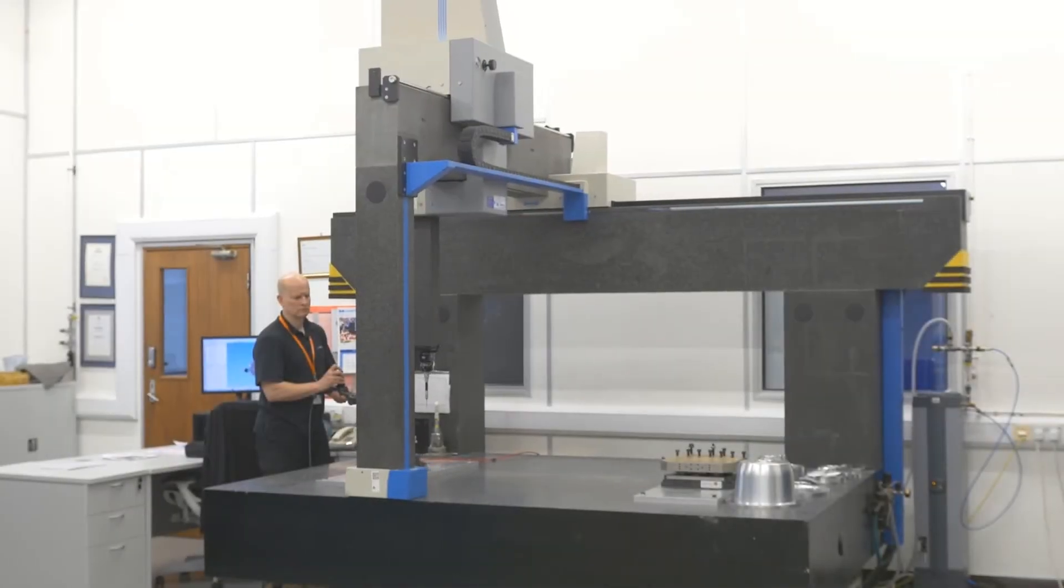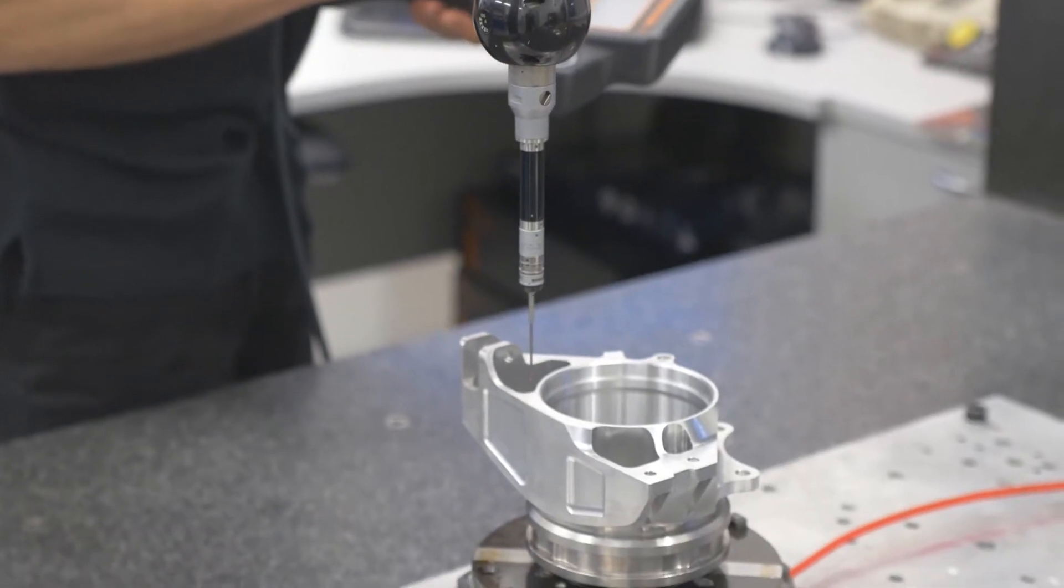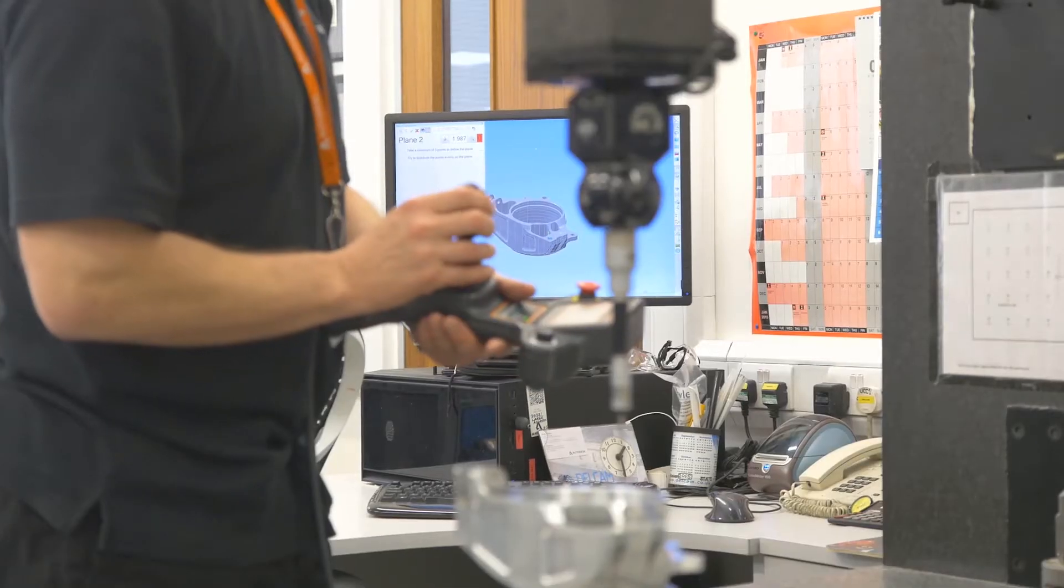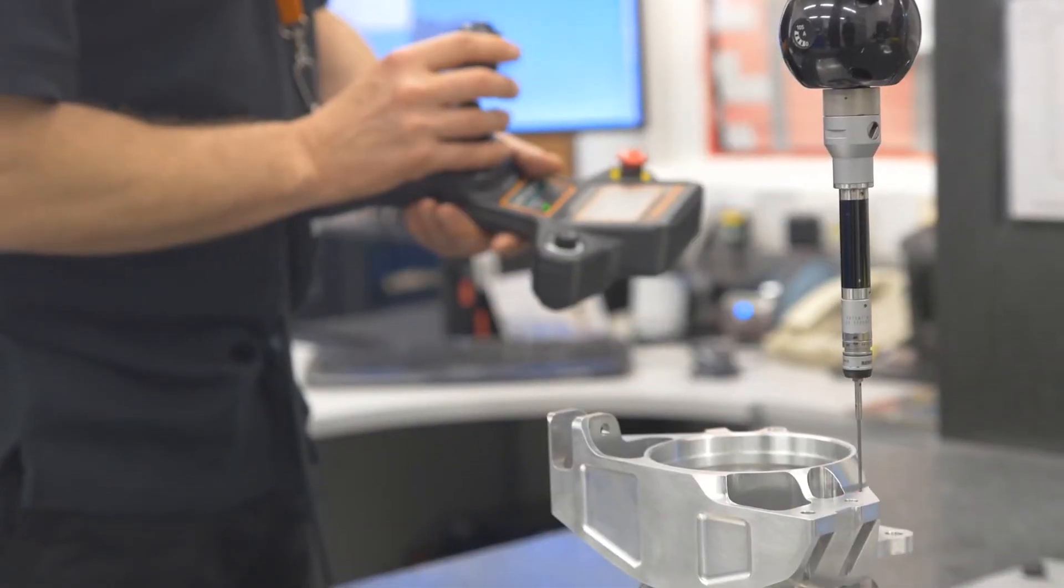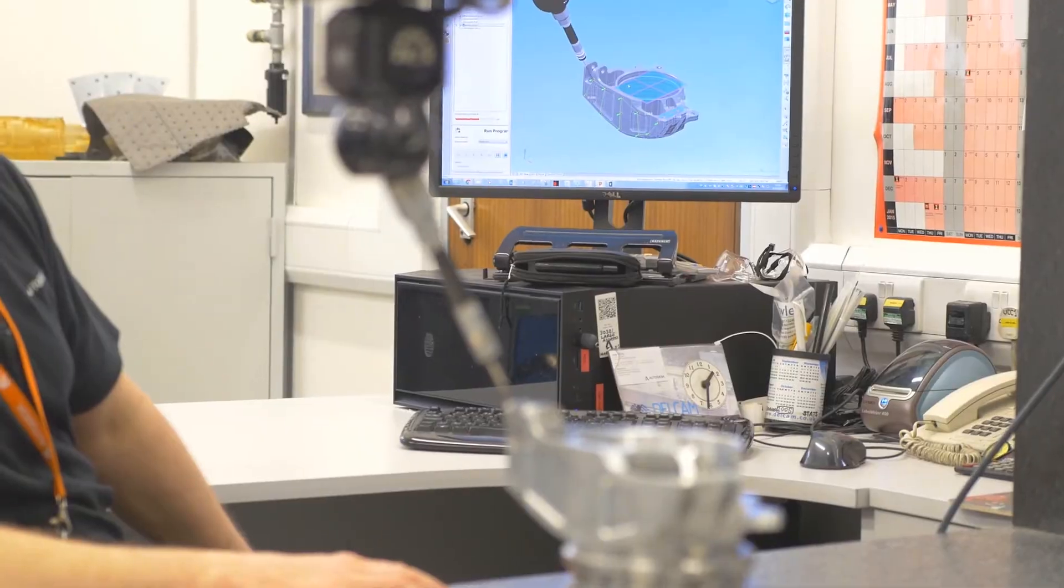CNC-coordinate measuring machines, also known as CMMs, are the industry standard for high-accuracy automated inspection. These devices are equally well suited to measuring prismatic or complex freeform parts.